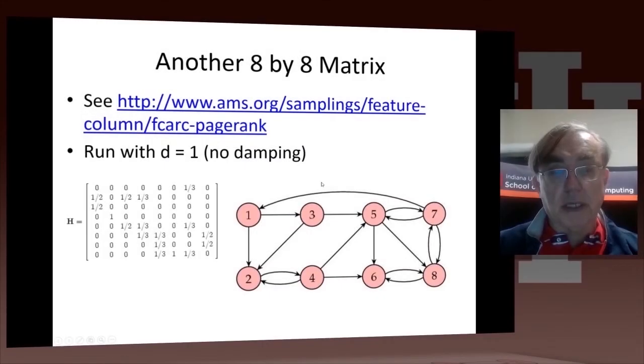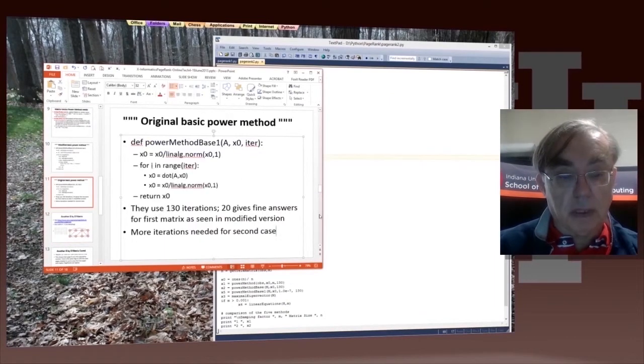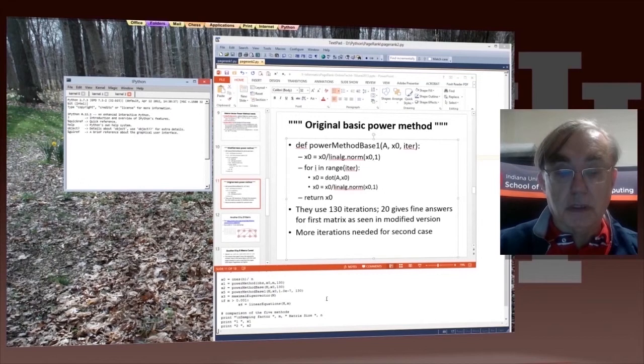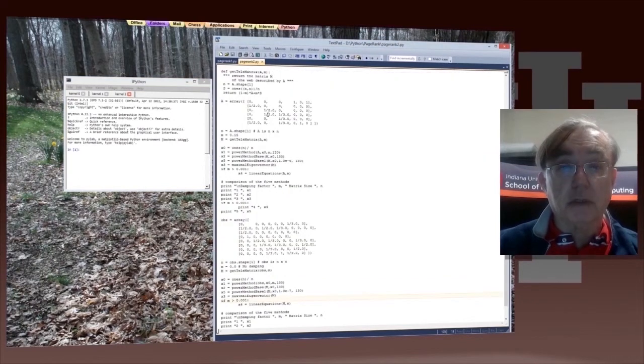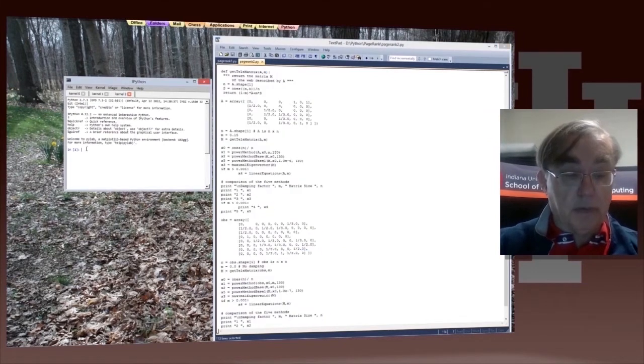All right, so now we can do another case. But before we do that, let's actually do this for real. Here's the IPython. Let's take a nice new environment. Let's go to PageRank 2. We don't need to change any parameters. We just copy it and then we run it.